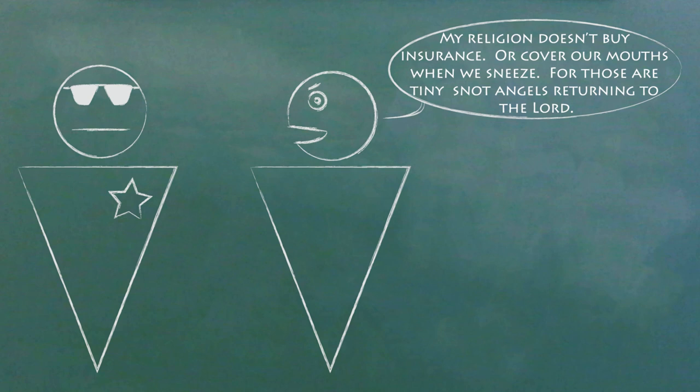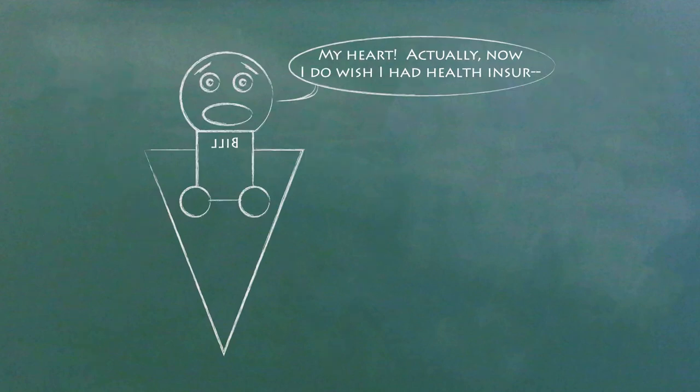You are exempt if your religious beliefs prevent you from buying insurance, if you're on a government health benefits program, if you would be paying more than 8% of your income for the cheapest plan even after subsidies, if you don't make enough money to file a tax return, if you live outside the U.S., or if you are Native American. By 2016, the penalty will be $695 for individuals or $2,085 for families or 2.5% of income, whichever is greater. You'll pay it as part of your tax return every year.